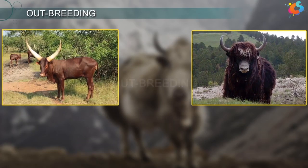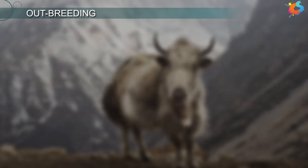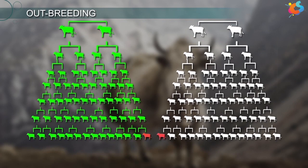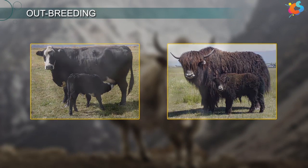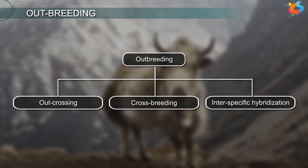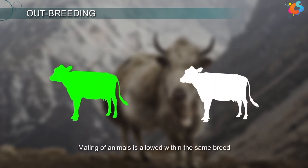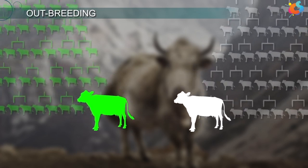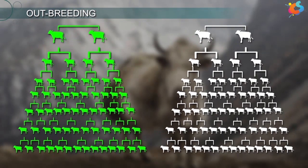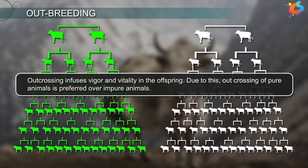Outbreeding is a technique in which breeding is done between unrelated animals. The term unrelated refers to animals of either the same breed having different ancestors, or animals of different breeds or different species. Outbreeding is generally carried out by three ways: outcrossing, crossbreeding, and interspecific hybridization. In outcrossing, mating of animals is allowed within the same breed, where both animals do not have common ancestry for at least six generations. This overcomes inbreeding depression and infuses vigour and vitality in the offspring.